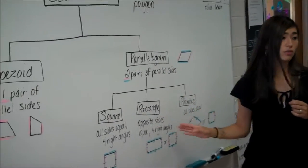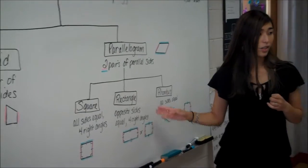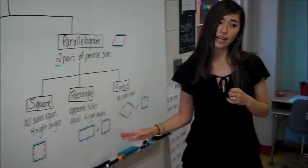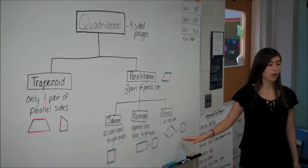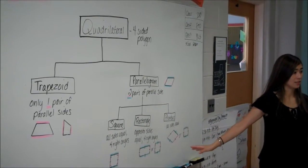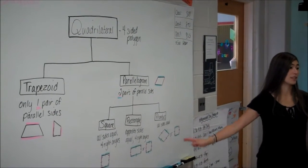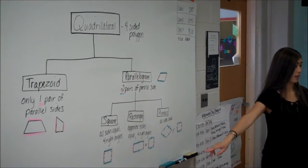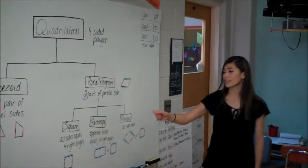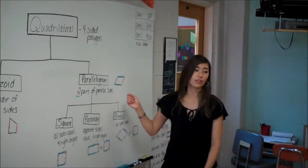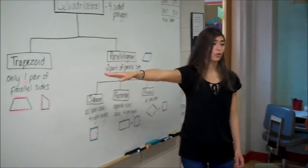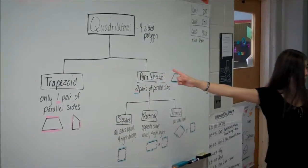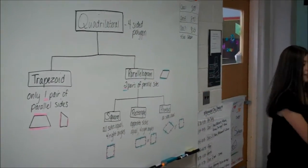Are all squares rectangles? Yes. Are all rectangles considered squares? No. Very good. Are all squares rhombuses? Yes. Are all rhombuses considered squares? No. Square, rectangle, and rhombus are all types of parallelograms. Very good. And those coupled with trapezoid are all types of quadrilaterals. Very good.